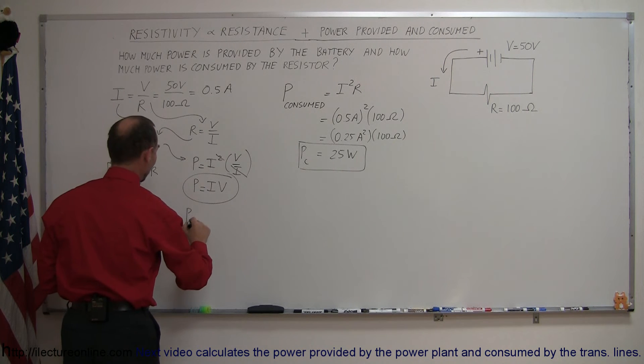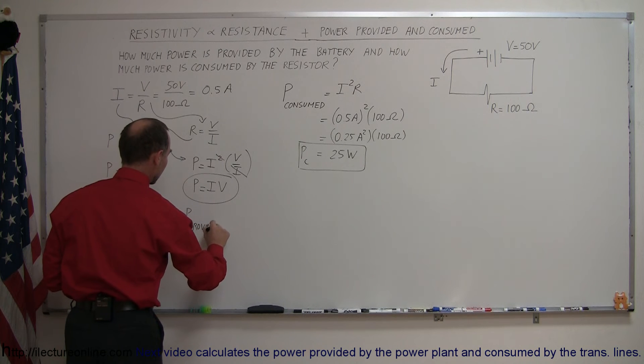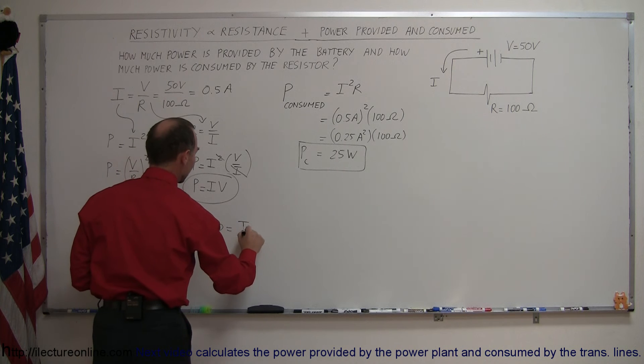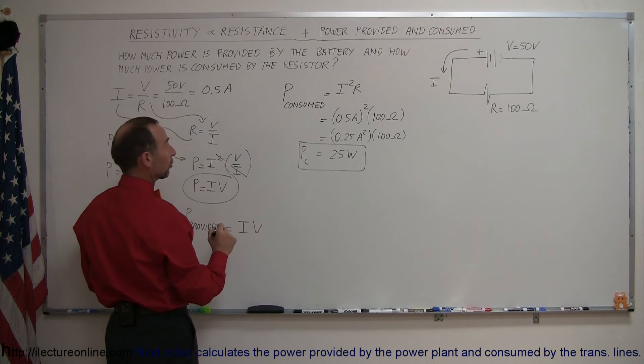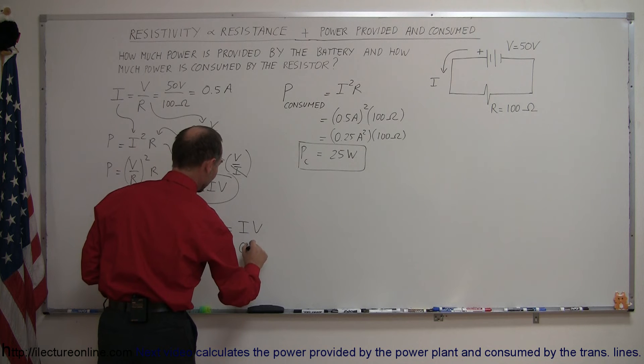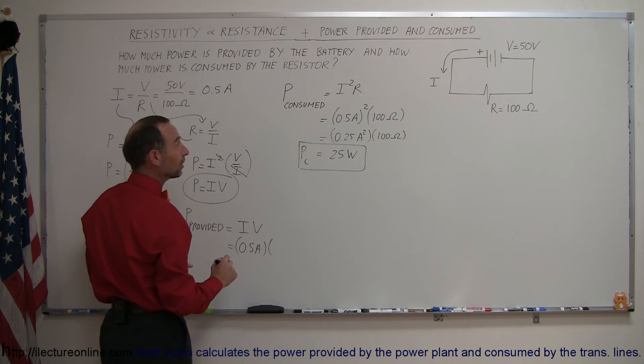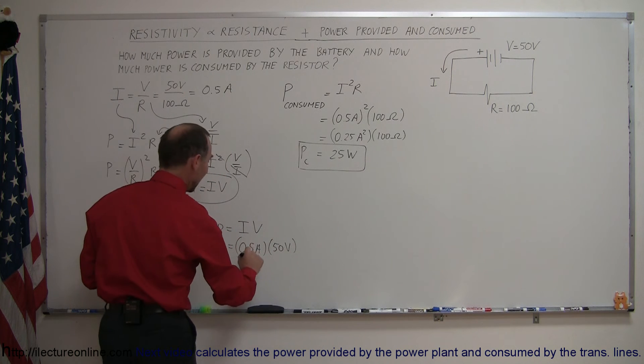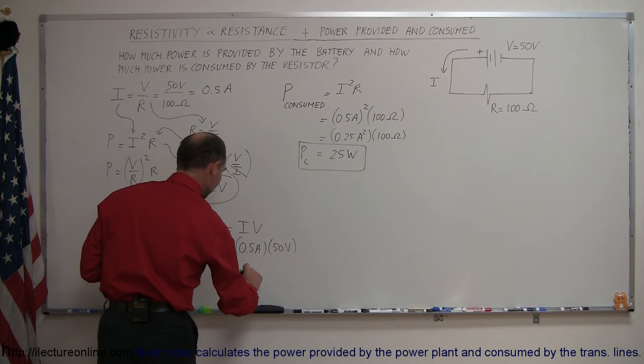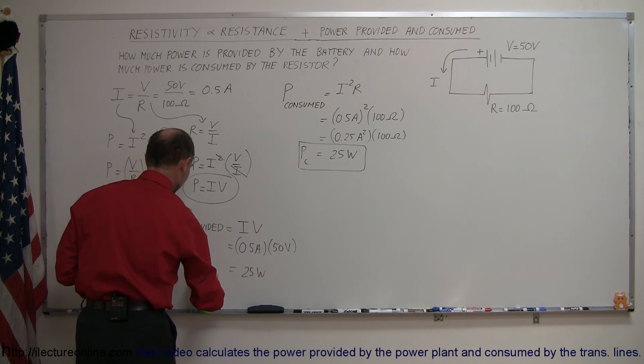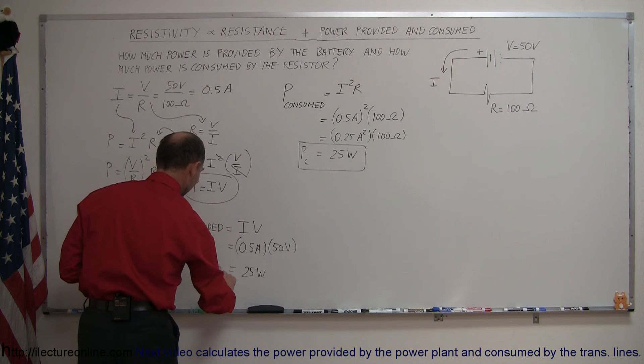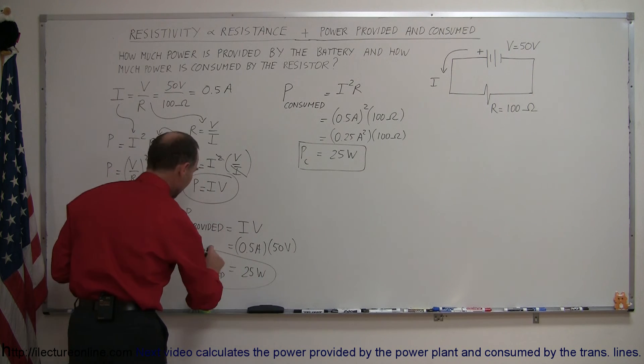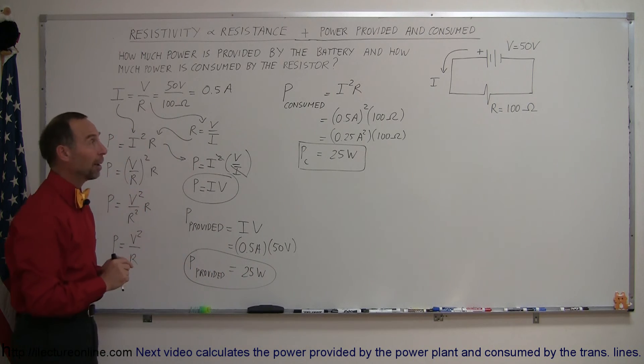So we can say power provided is equal to I times V. And in this particular example, the current in the circuit is a half amp, 0.5 amps, and the voltage providing the current is 50 volts. And you can see that amps times volts is also watts. So this is equal to 25 watts. So in this case, power provided and power consumed is the very same in this example.